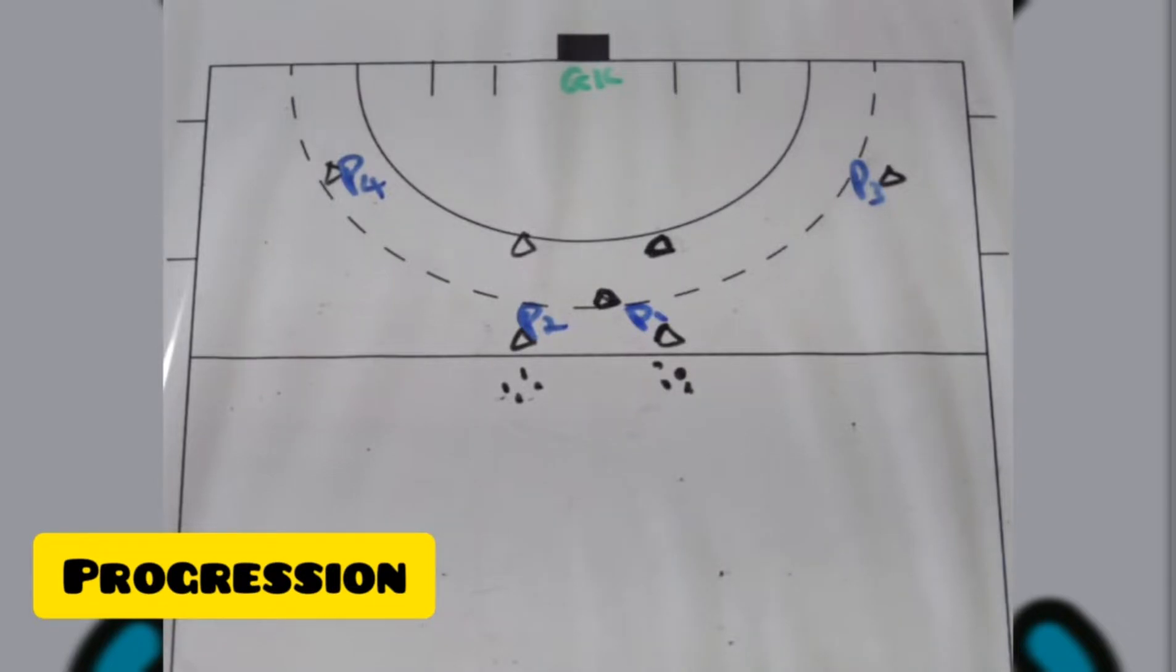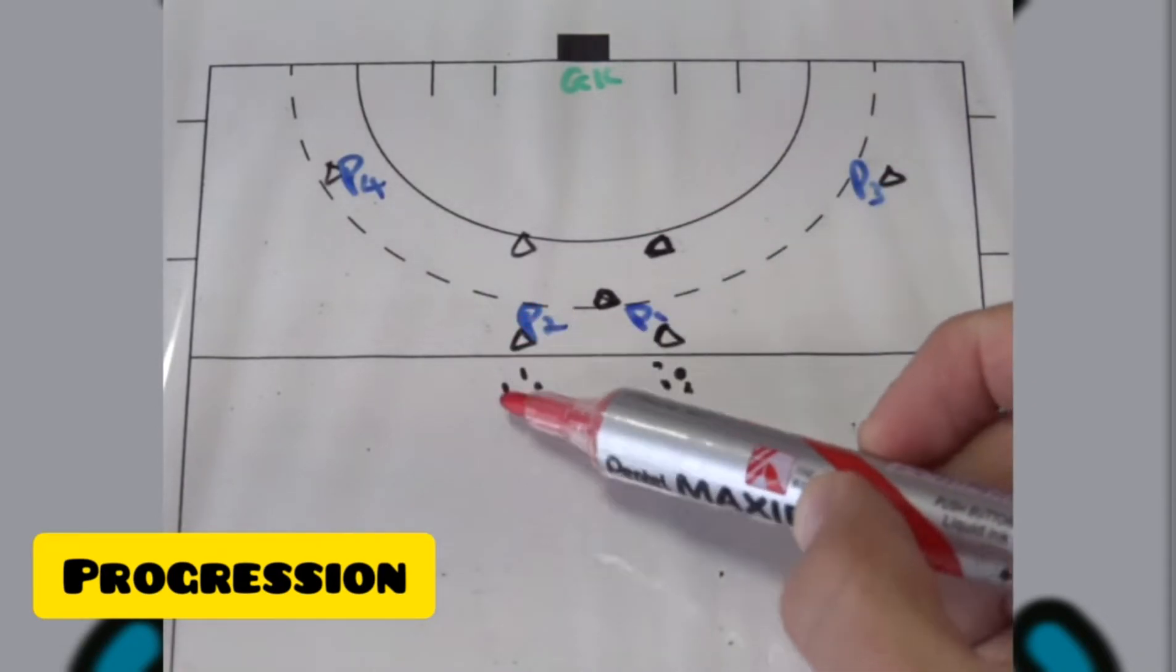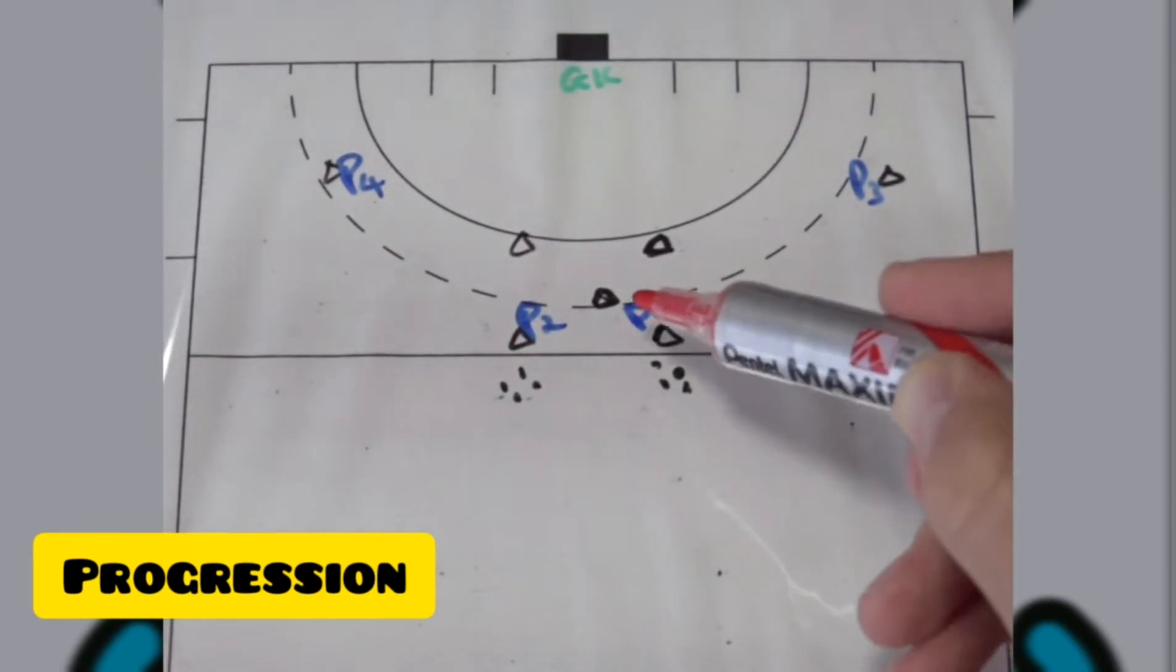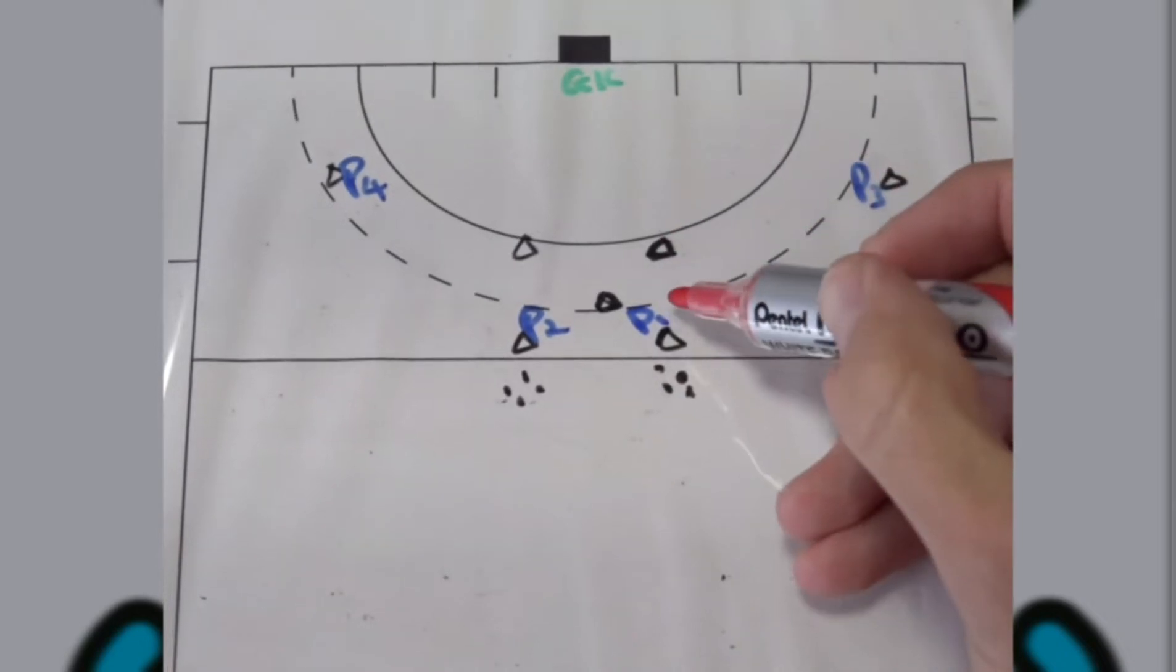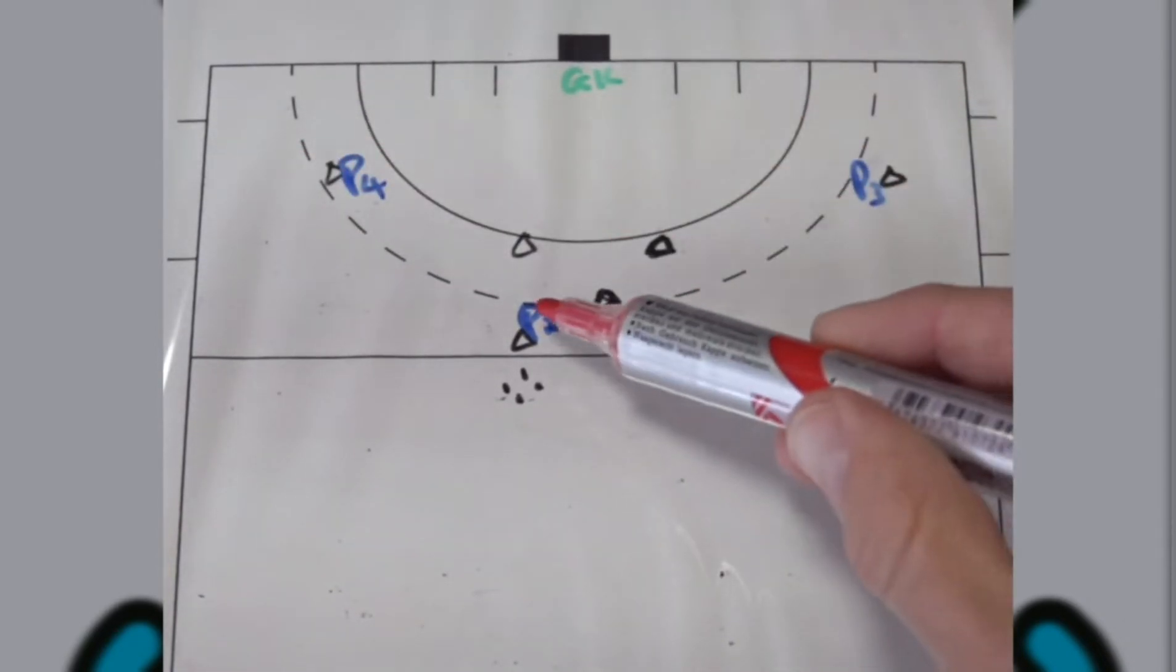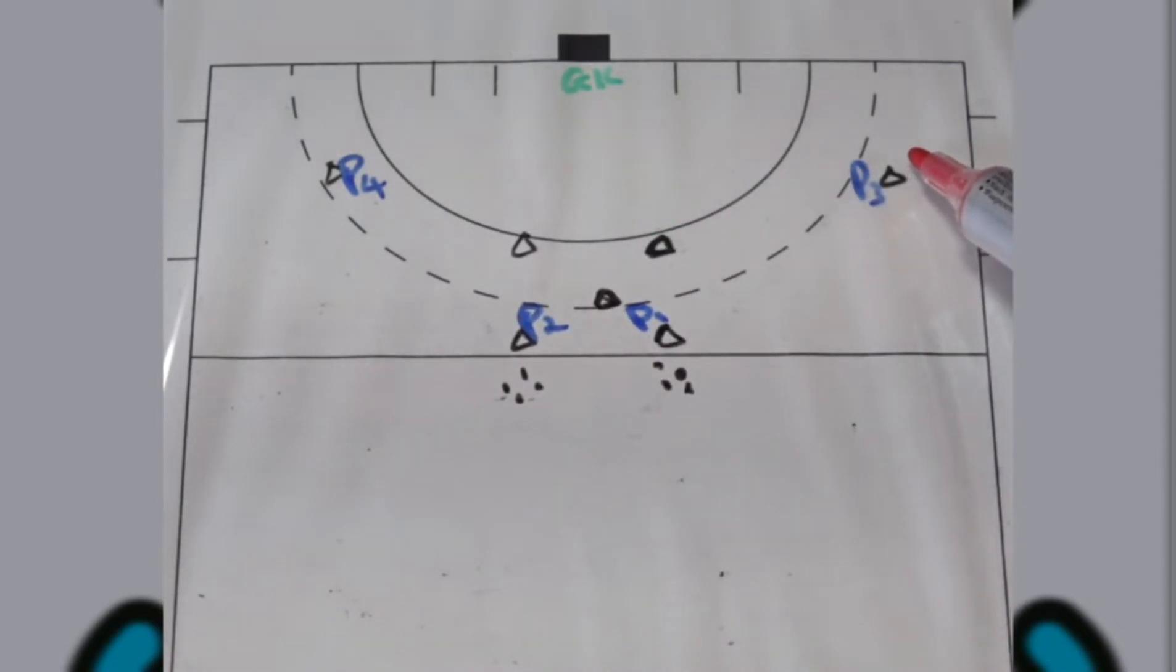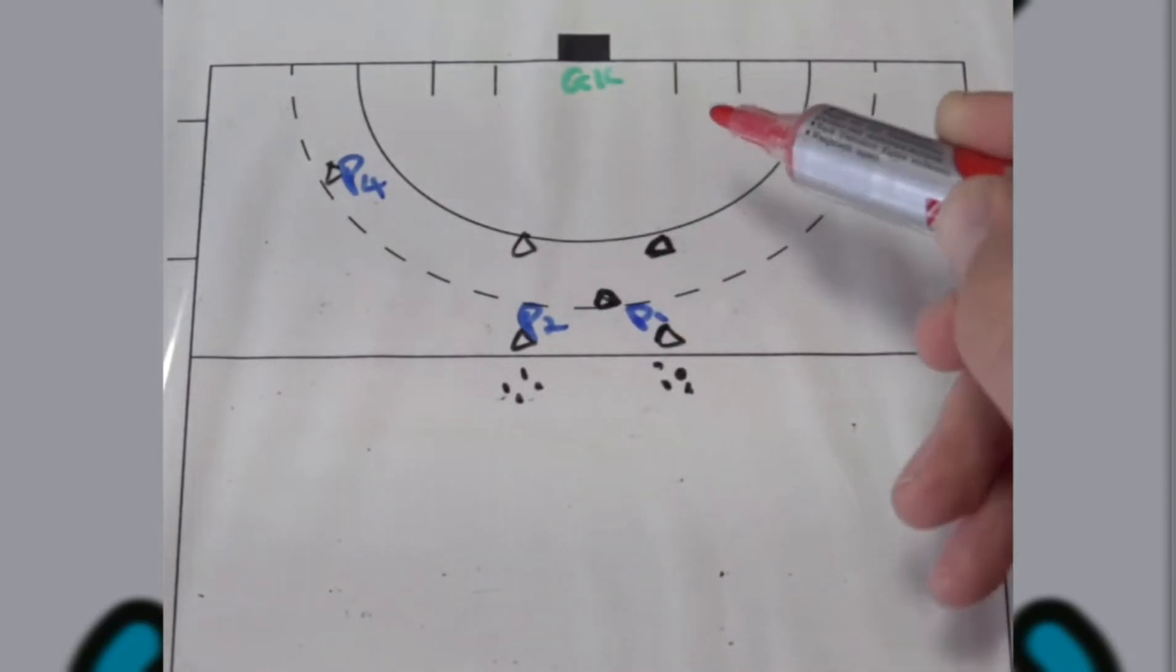For the progression after you warmed up the keeper, you'll have players on this cone on the outside and players on this cone on the outside, and then the rest will be lined up over here. What will happen is player one and player four is in a team, and player two and player three is in a team. So everyone that's across will be in some sort of a team.